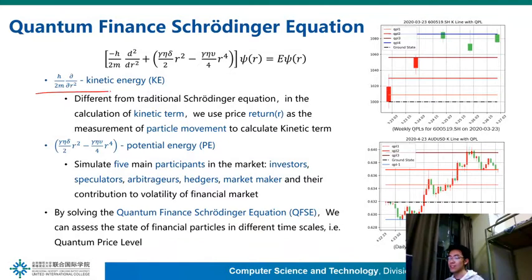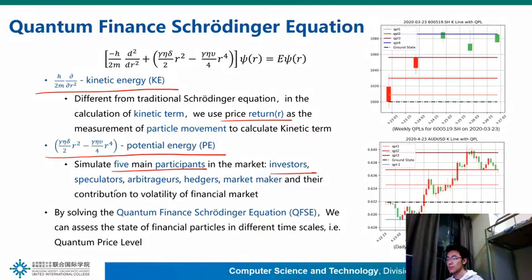The first term is kinetic energy. The price return R is used to make measurements of particle movement, replacing the displacement in classical quantum mechanics. The second term is potential energy, which simulates five main market participants: investors, speculators, arbitrators, hedgers, and market makers, and their contribution to market volatility.